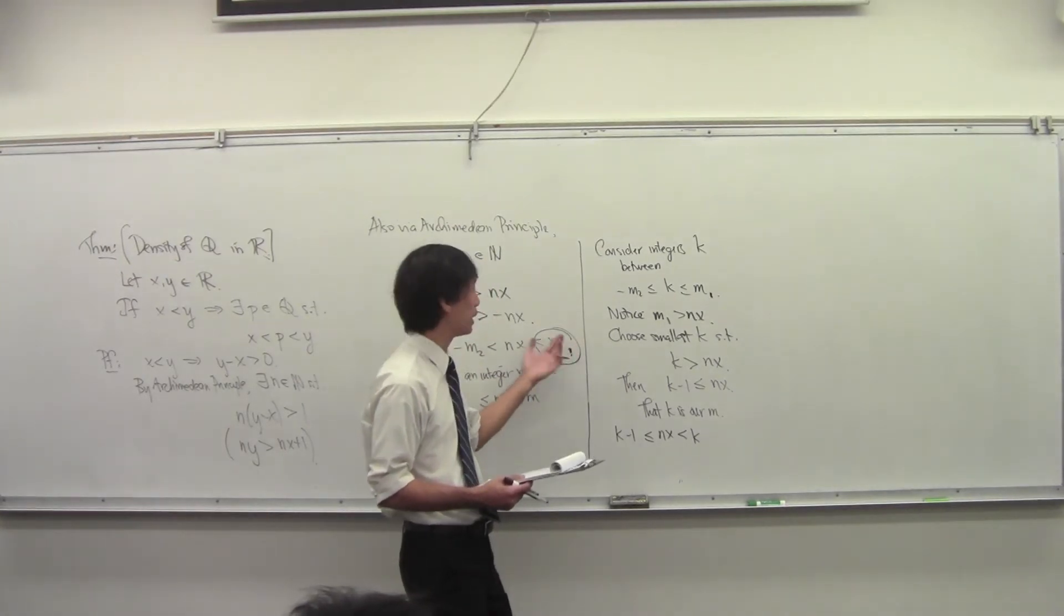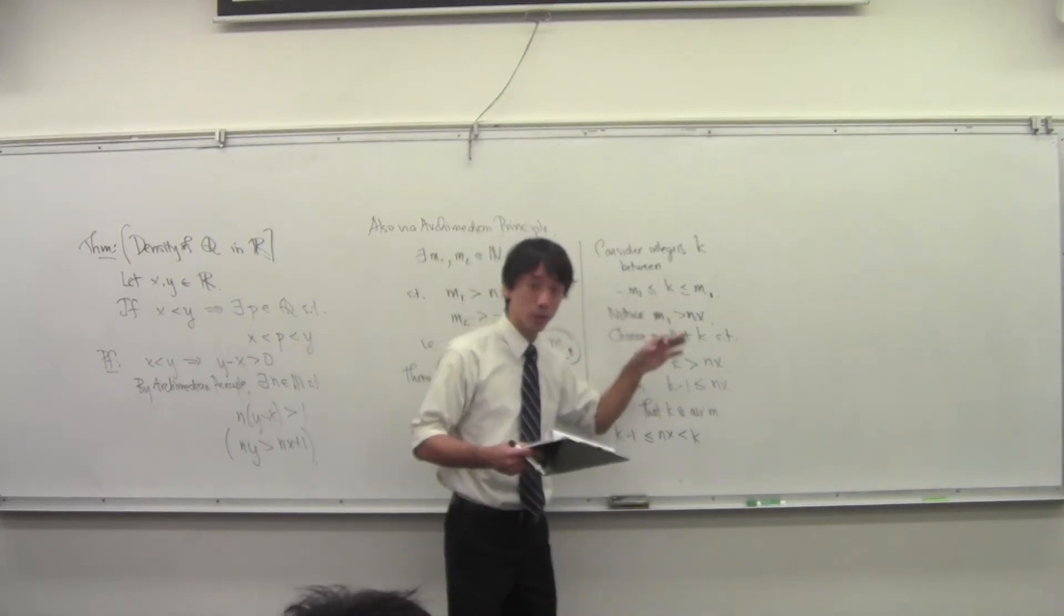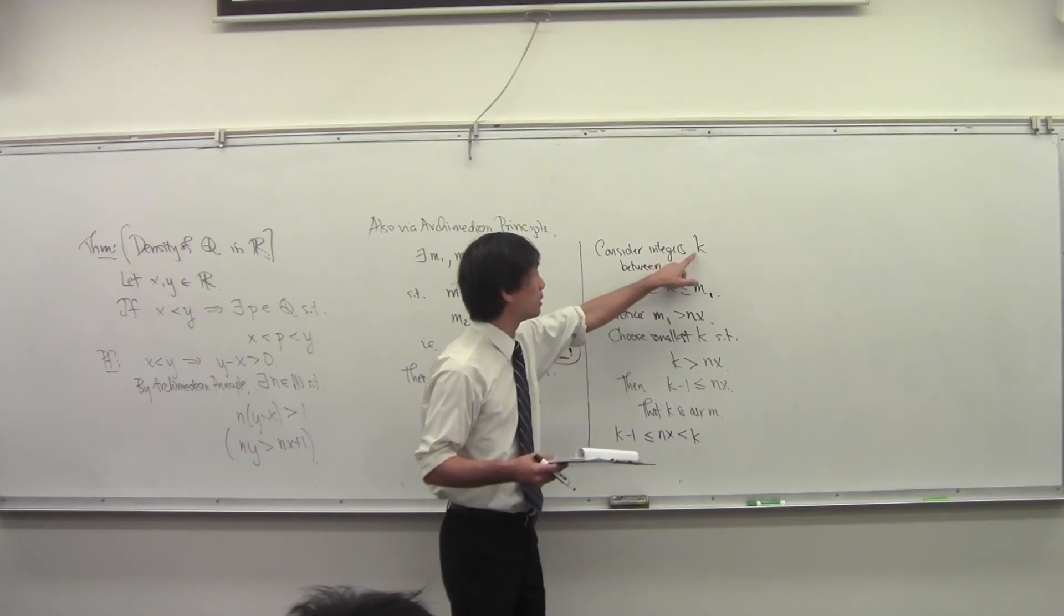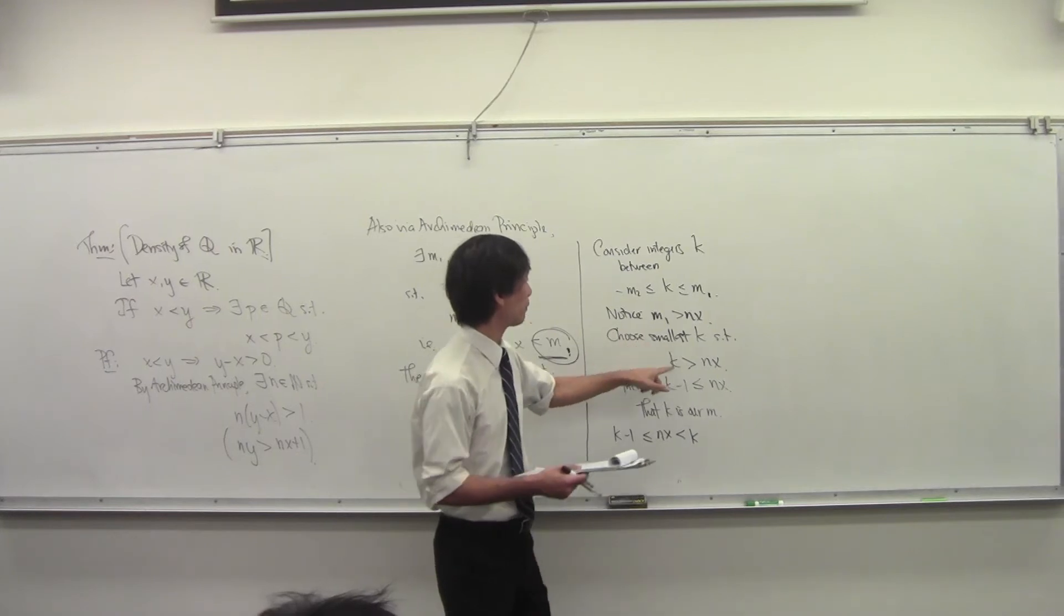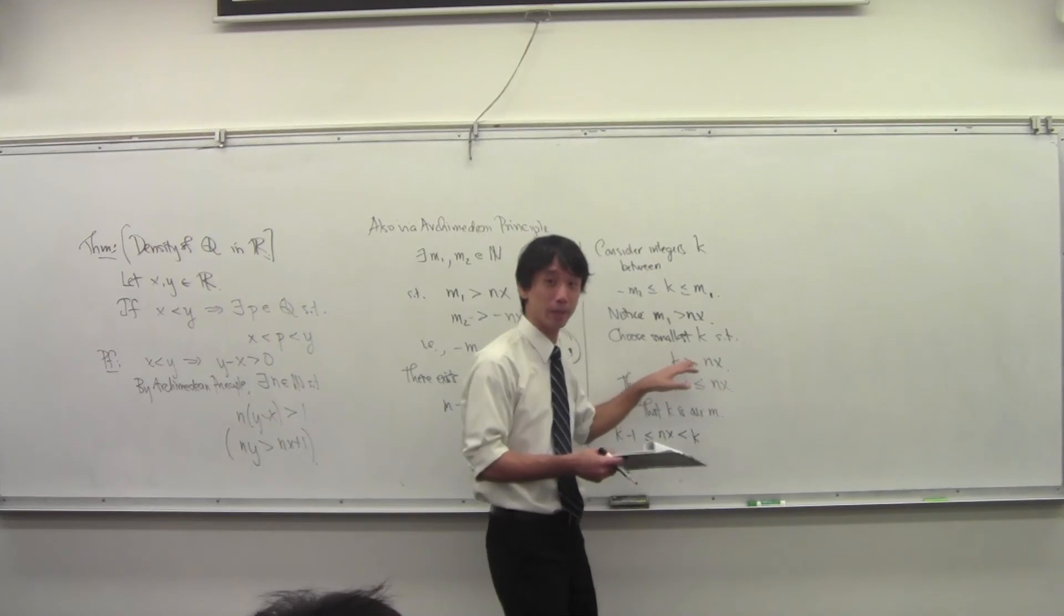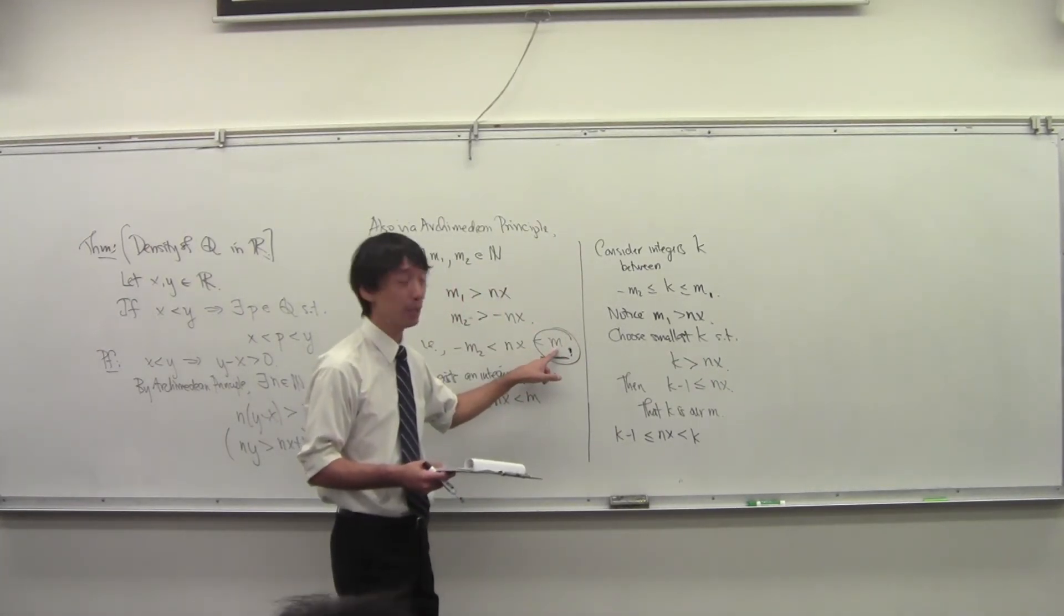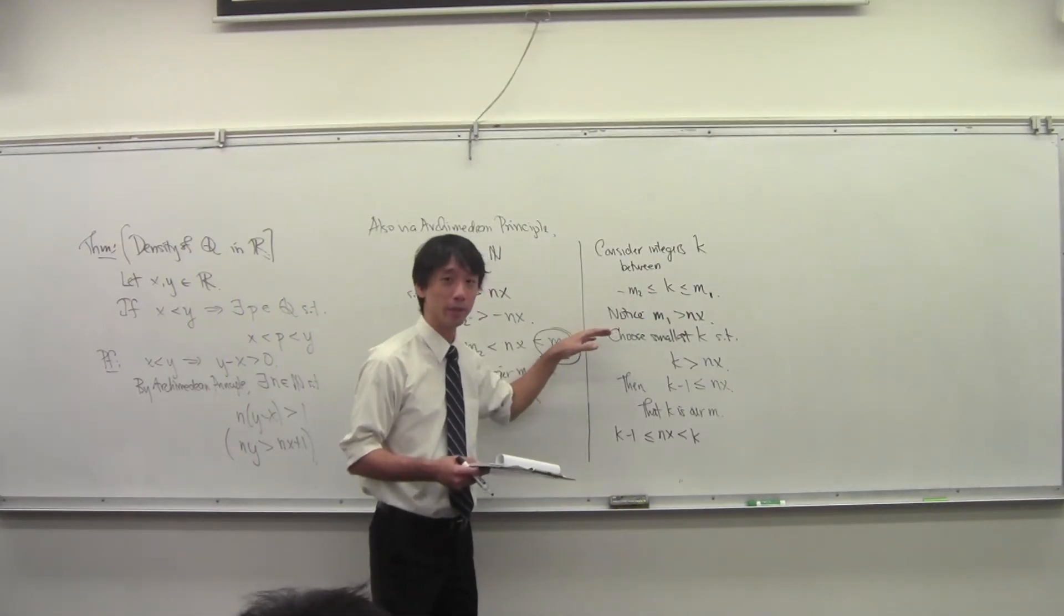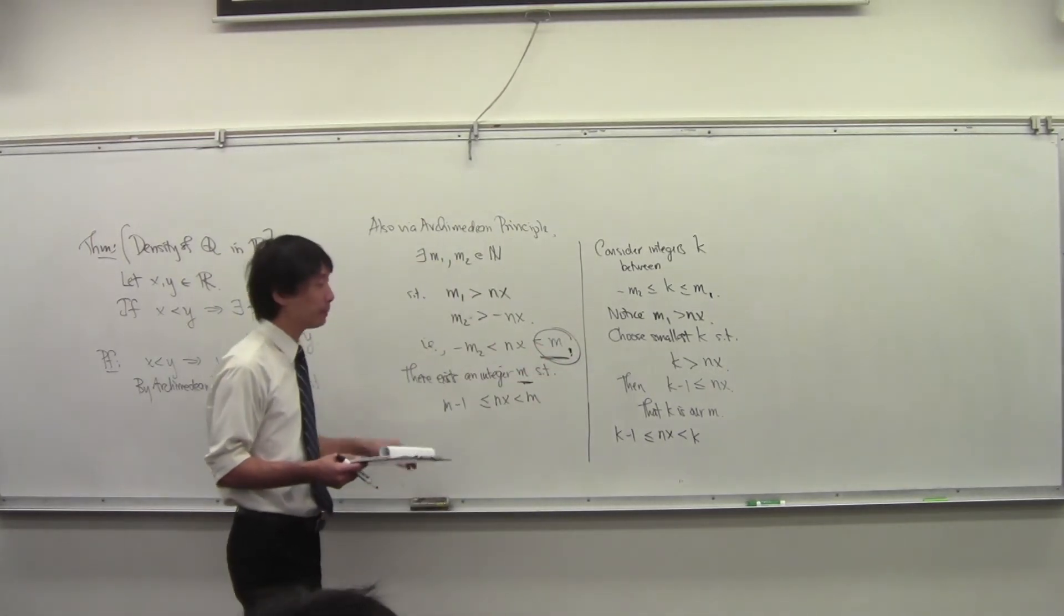If I throw that guy out, then you could rightfully say, how do you know that there's any number for which this happens? But we know that there's some K that works, namely M1 works. And we say, okay, we know there's one guy in there that works, choose the smallest guy that works. Consider the elements between here and here for which K is bigger than NX. It's not empty because M1 works. Now it's a finite set because we're trapped between here and here. Choose the smallest guy in there.